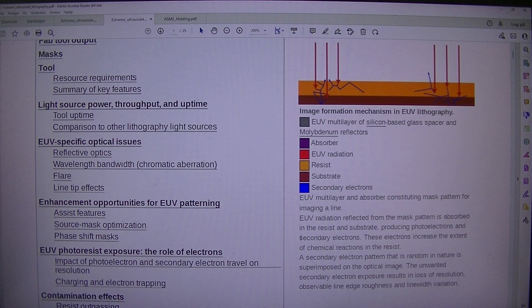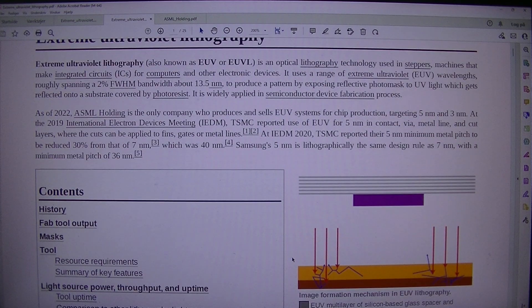Producing photoelectrons and secondary electrons, these electrons increase the extent of chemical reactions in the resist. A secondary electron pattern that is random in nature is superimposed on the optical image. The unwanted secondary electron exposure results in loss of resolution, observable line edge roughness, and line width variation.